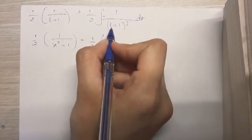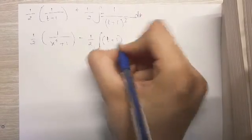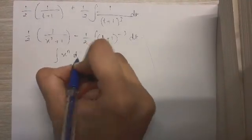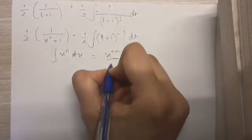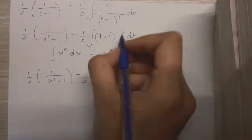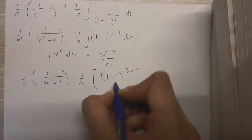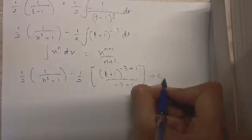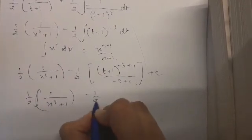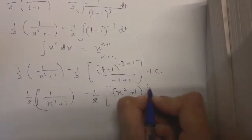We know that when we have x raised to n in the integral, the answer is x raised to n plus one upon n plus one. So here we have t plus one raised to minus three plus one, upon minus three plus one, which is t plus one raised to minus two upon minus two. Back-substituting, this becomes x squared plus one raised to minus two upon minus two.